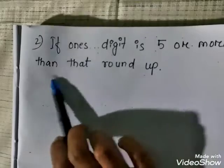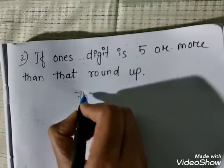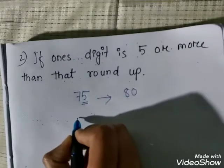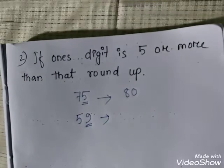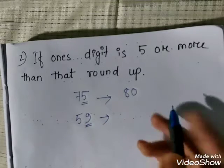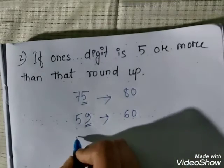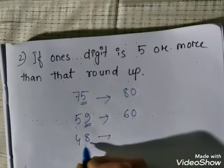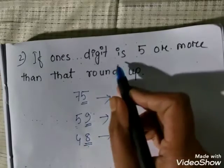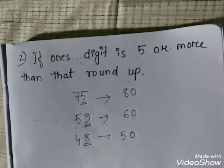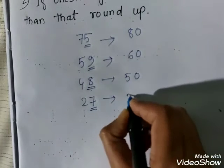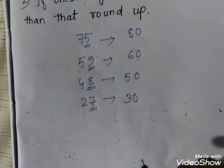If the ones digit is 5 or more, then round up. For example, 75 — the ones place is 5, so it rounds up to 80. For 59 — the ones place is 9, which is more than 5, so it rounds up to 60. For 48 — the ones place is 8, more than 5, so it rounds up to 50. For 27 — the ones place is 7, more than 5, so it rounds up to 30. By looking at the ones place, you can easily round off numbers.